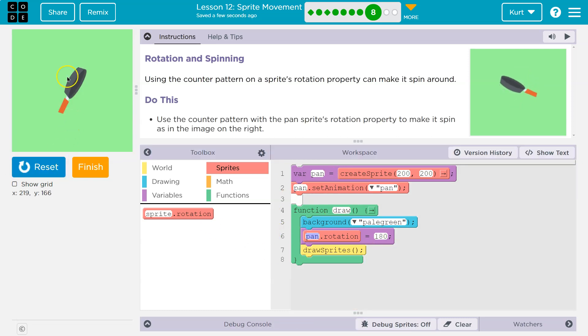Wait, it's not moving yet. And that is because 30 times a second, I'm telling the computer, make a green background. The pan's rotation is equal to 180. Draw the sprite. Make a green background. The pan's rotation is equal to 180. Draw the sprite. Right. This would be the same thing as, or this is just like saying 30 times a second.